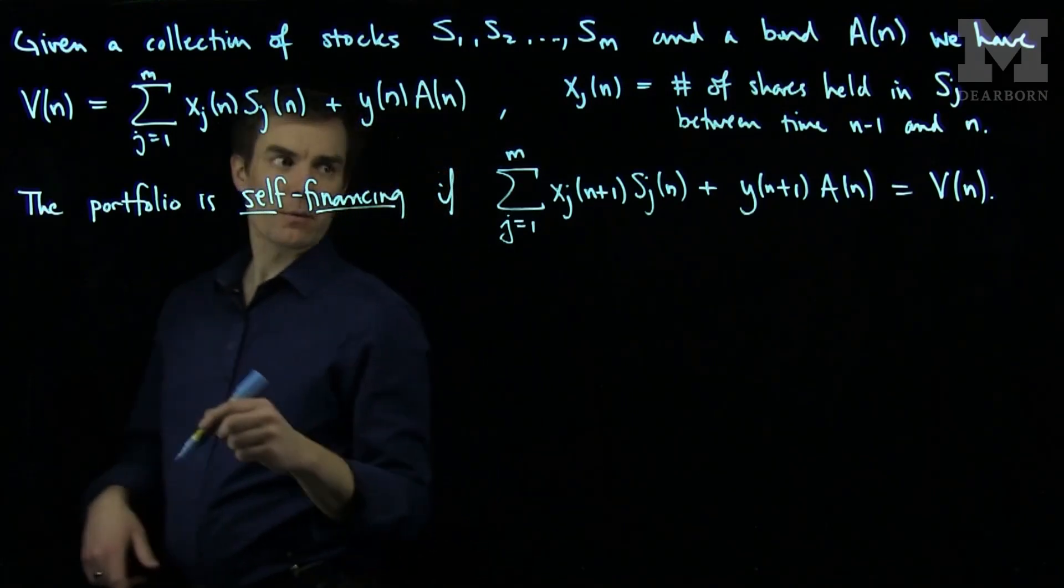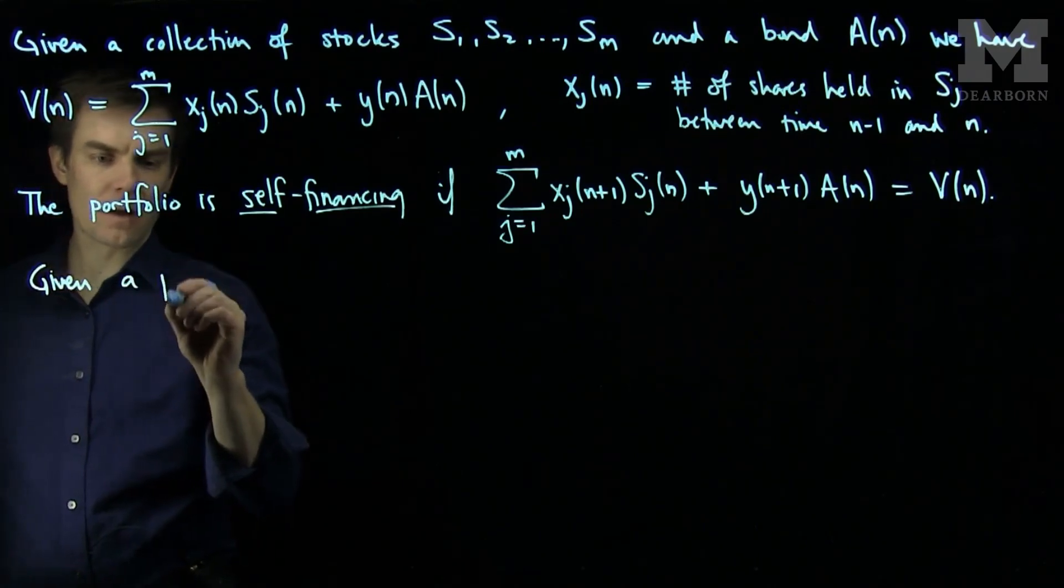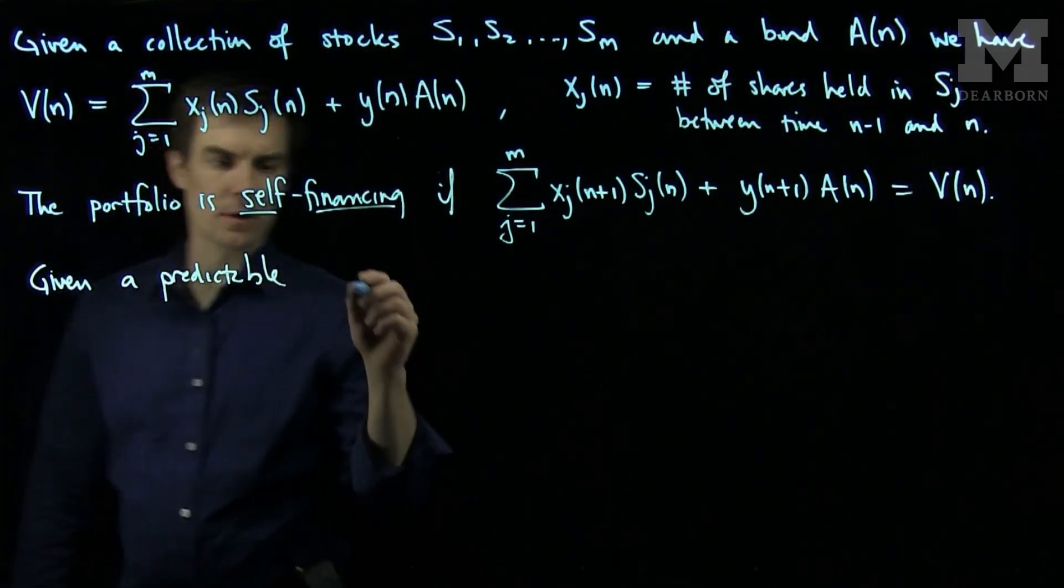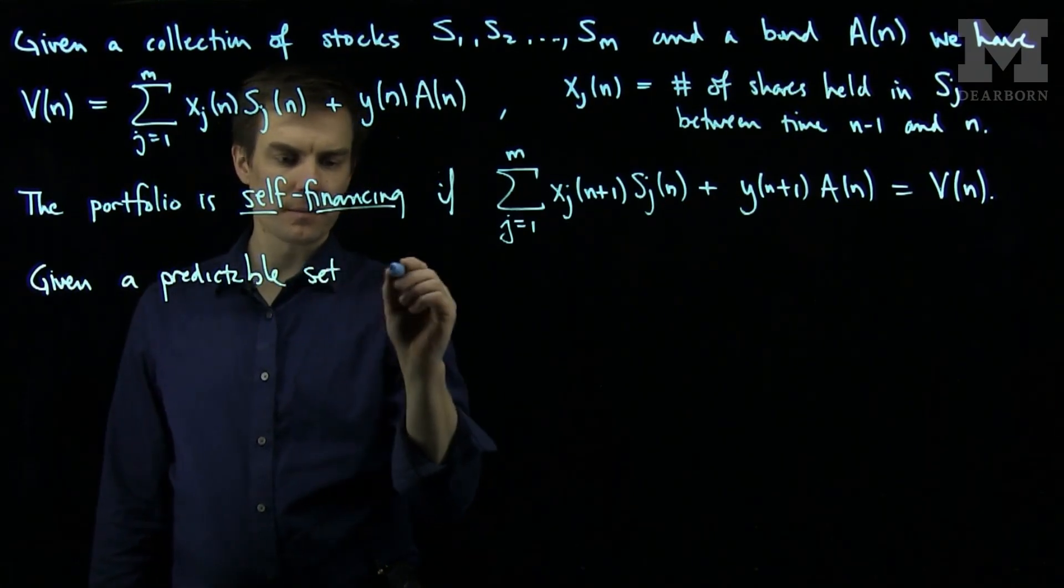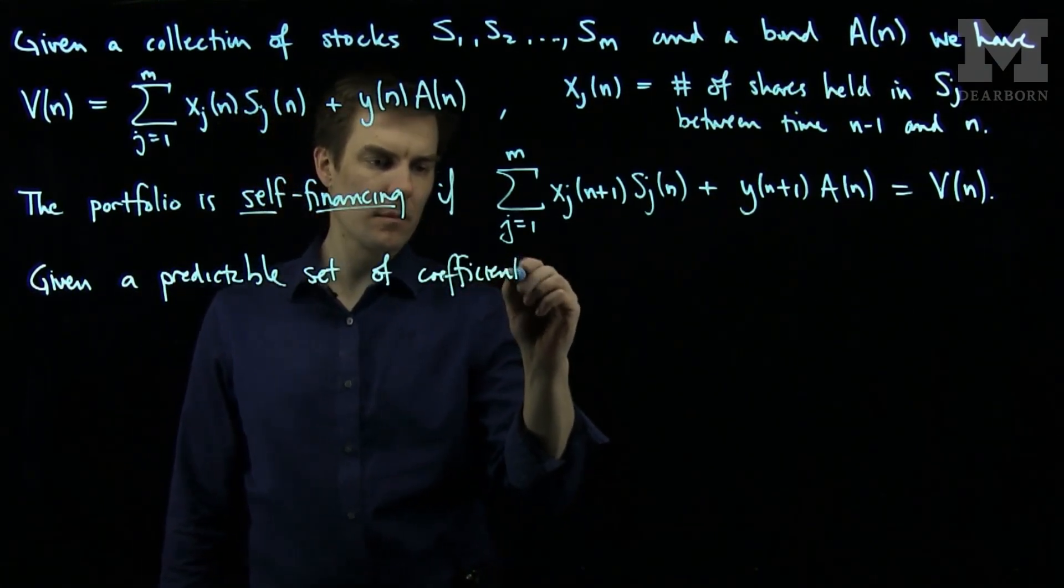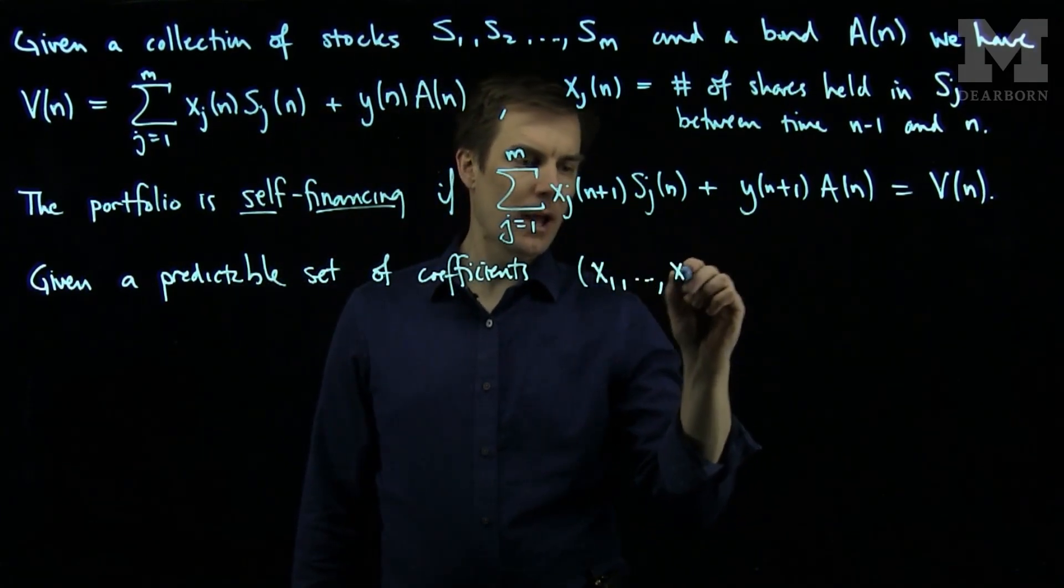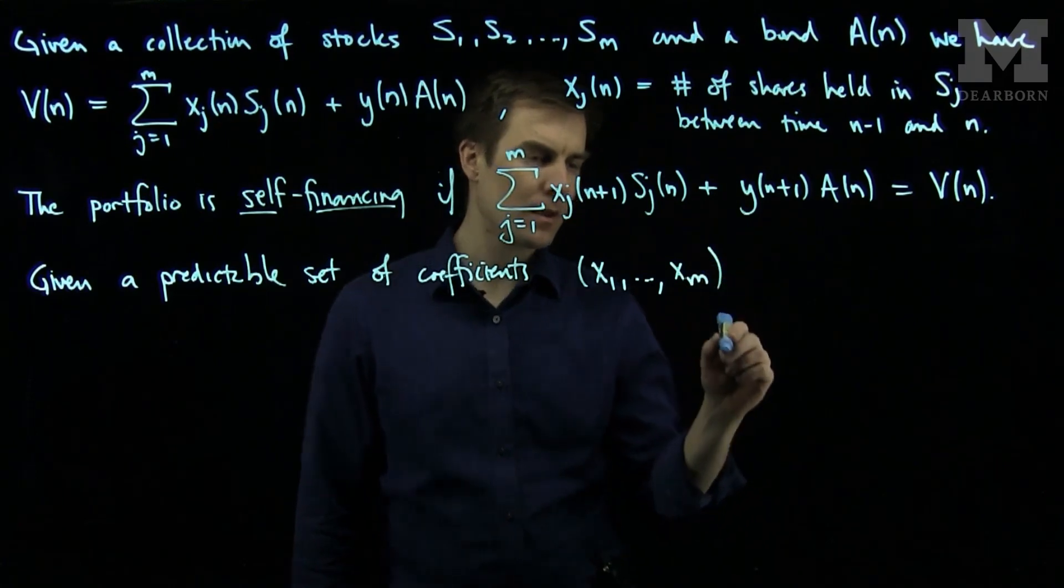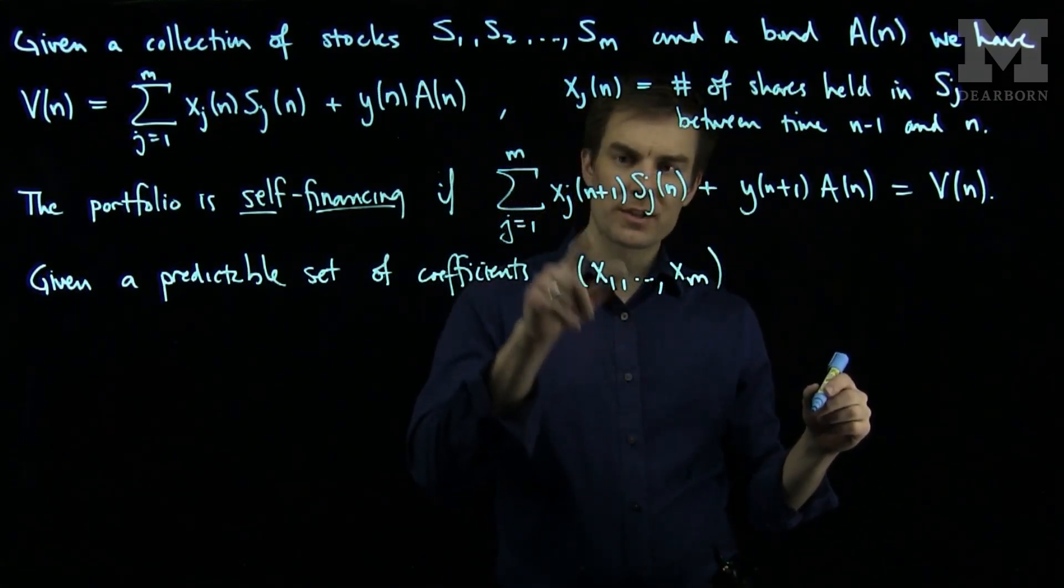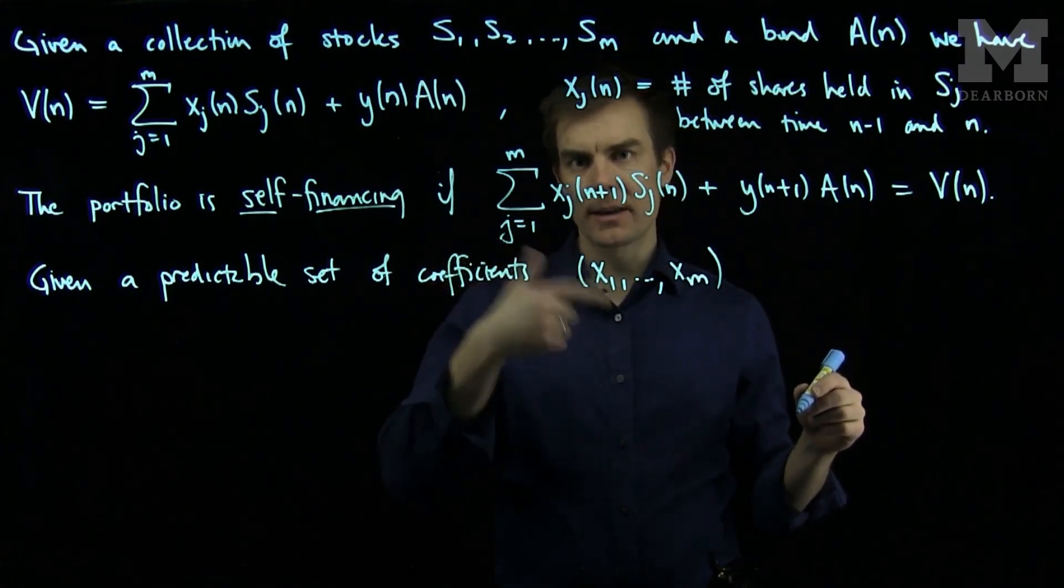The main result is that if you're given a predictable set of coefficients x_1 through x_m, meaning that the predictable coefficients at time n+1 are known in the history at time n and below,